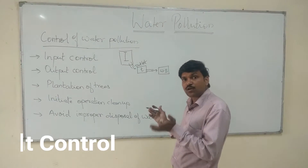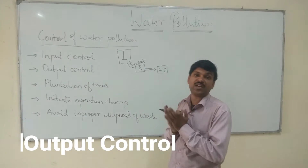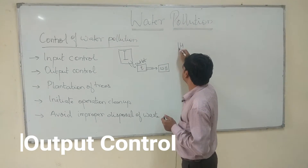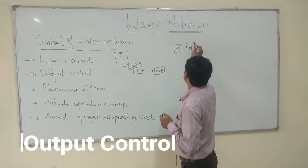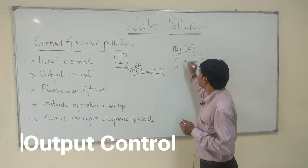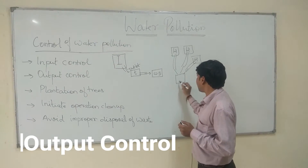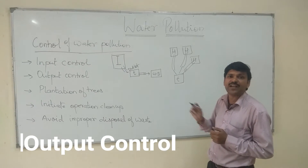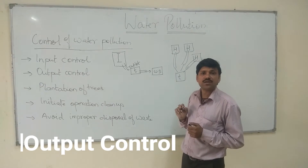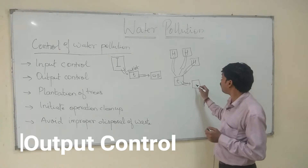Output control is a method in which treatment of waste material occurs away from the point of origin — meaning a collective, common treatment of waste material. In output control, waste is collected from different houses — house one, house two, house three. These houses have some outlets, and the collective waste gets treated in a common treatment plant. This type of treatment is known as output control.